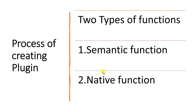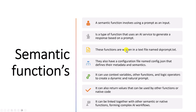In this video I am focused on the semantic function. So what is a semantic function? A semantic function involves using a prompt as an input. If you are using a semantic function you have to define the prompt. That prompt is a generator — it uses a service and generates a response based on your prompt. This prompt should be defined in a text file and the file name should be named skprompt.txt.